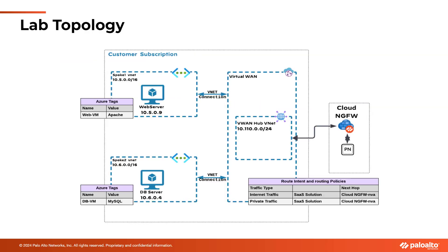Here is the topology I am going to use for this demonstration. You can see that I have Cloud NGFW connected to Azure Virtual WAN, and to this Azure Virtual WAN there are two spoke VNets — spoke VNet one with a web server and the other with a DB server. These web server and DB server VMs on Azure portal are assigned with Azure tags, as you can see the name and value of the tags configured within these virtual machines. I'll show these tags on the Azure portal itself.